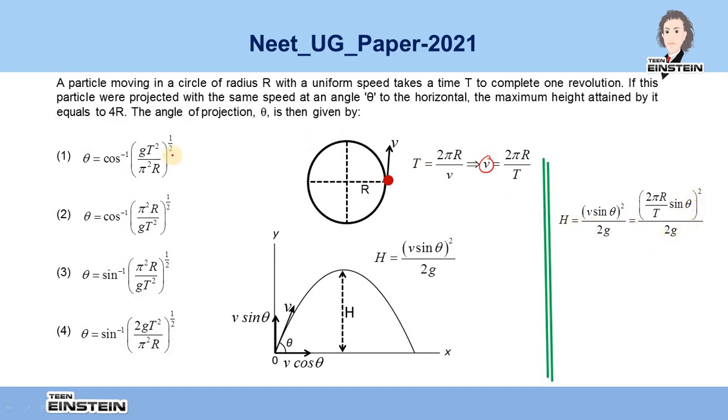In the problem, it is given that H equals 4R. If we replace H by 4R, we get 4R equals (2πR/T)² sin² theta.